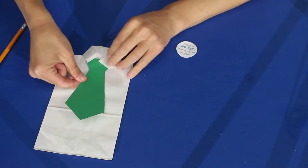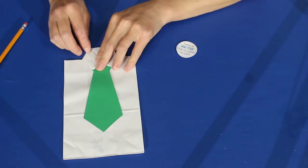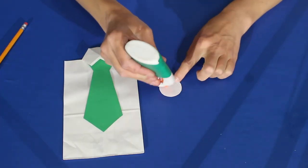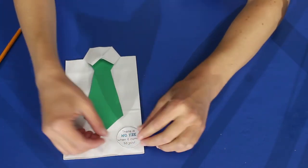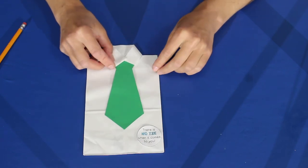Then you can glue or tape on the badge that says there's no tie when it comes to you. And lastly, add your buttons. You don't have to put them on the collar, but that's where I put them.